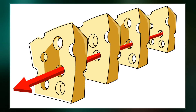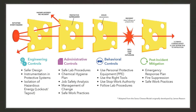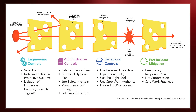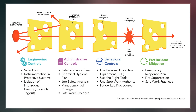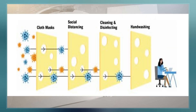It likens human systems to multiple slices of Swiss cheese, stacked side by side, in which the risk of a threat becoming a reality is mitigated by the differing layers and types of defenses which are layered behind each other. Therefore, in theory, lapses and weaknesses in one defense do not allow a risk to materialize, since other defenses also exist to prevent a single point of failure.